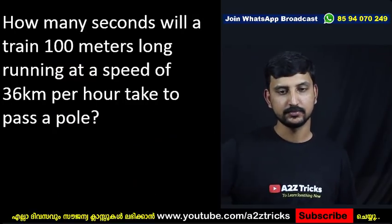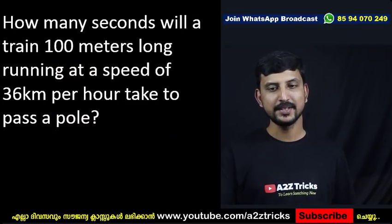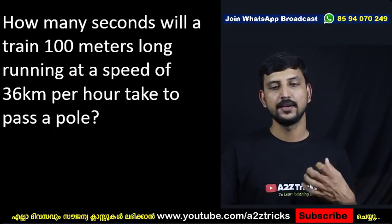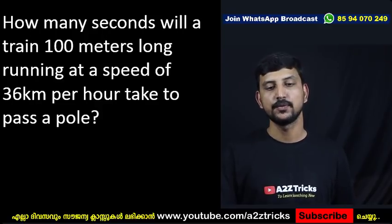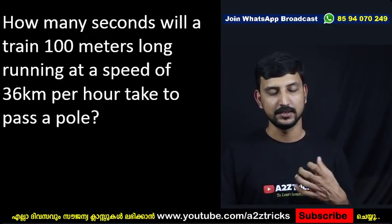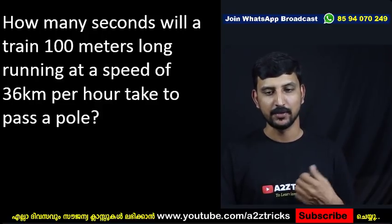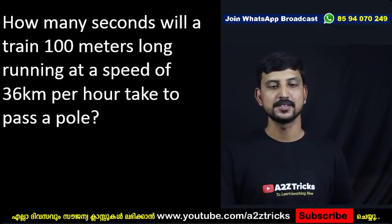How many seconds will a train 100 meters long, running at a speed of 36 km per hour, take to pass a post?